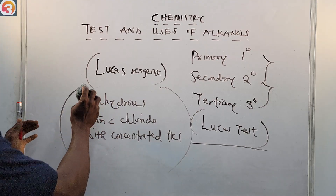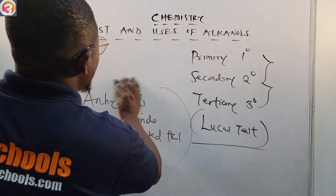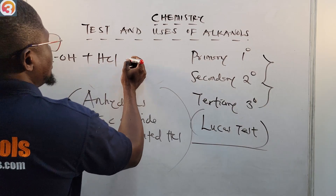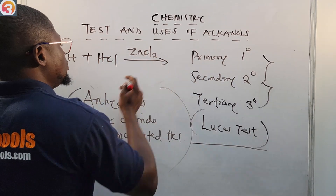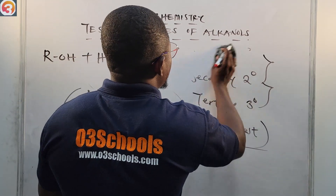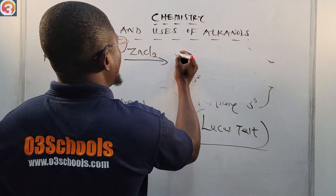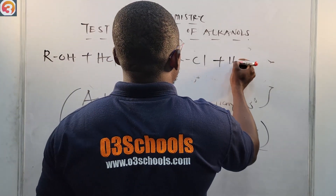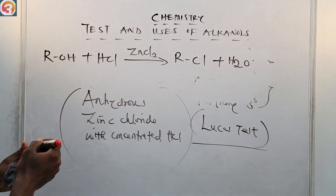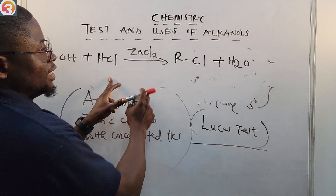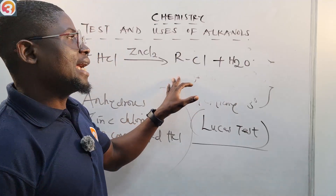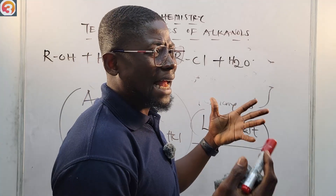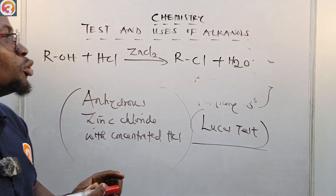The general reaction is: an alcohol (ROH) plus HCl, with ZnCl₂ as catalyst, gives an alkyl halide (RCl) plus water (H₂O). You put the Lucas reagent into the alcohol, and the product formed is an alkyl halide along with water. For primary alkanols, very importantly, primary alkanols do not form haloalkanes under these conditions.